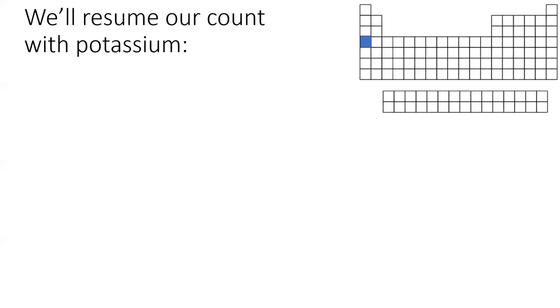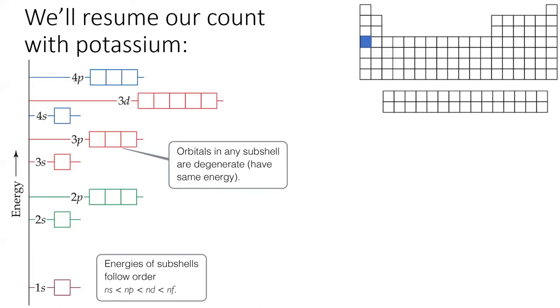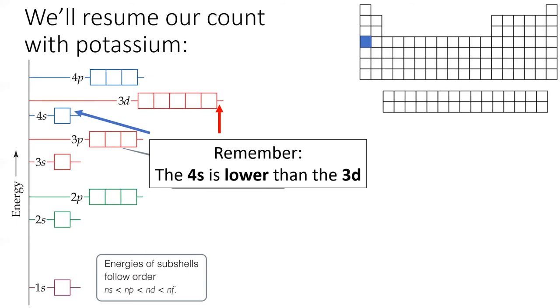We'll resume our count with potassium. But before we do, let's bring up that subshell energy level diagram from the last lesson. Remember that the 4s subshell is lower in energy than the 4d subshell. So, after filling the 3p subshell, we do not put any electrons in the 3d subshell. The next electrons go in the 4s. This means the electron configuration for potassium is argon 4s¹.